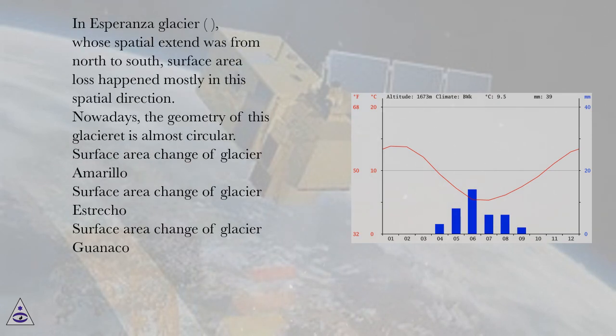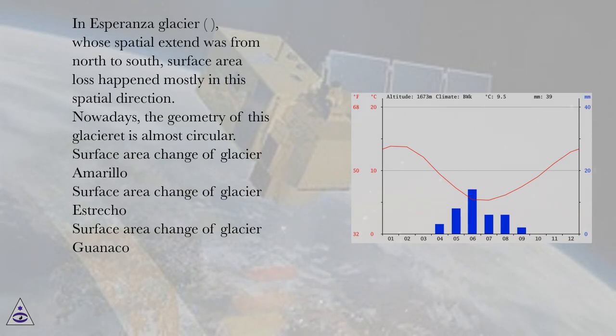For Esperanza Glacier, whose spatial extent was from north to south, surface area loss happened mostly in that spatial direction. Nowadays, the geometry of this glacier ray is almost circular.